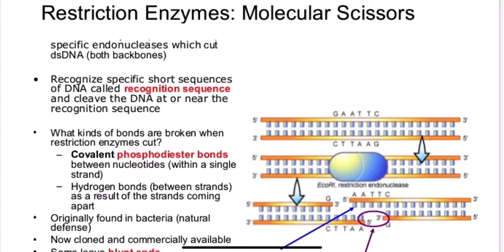So a restriction enzyme is a specific endonuclease that can cut double-stranded DNA. In other words, it can cut both backbones of the DNA. And how they do this is by recognizing short sequences of DNA called recognition sequences. And then they'll cleave the DNA at or near that recognition sequence.